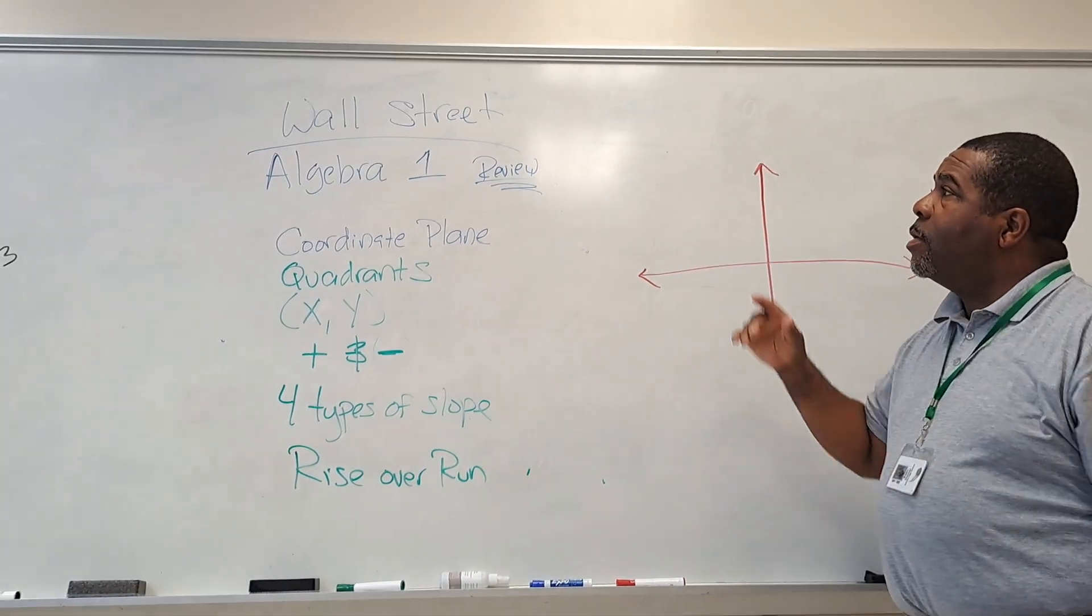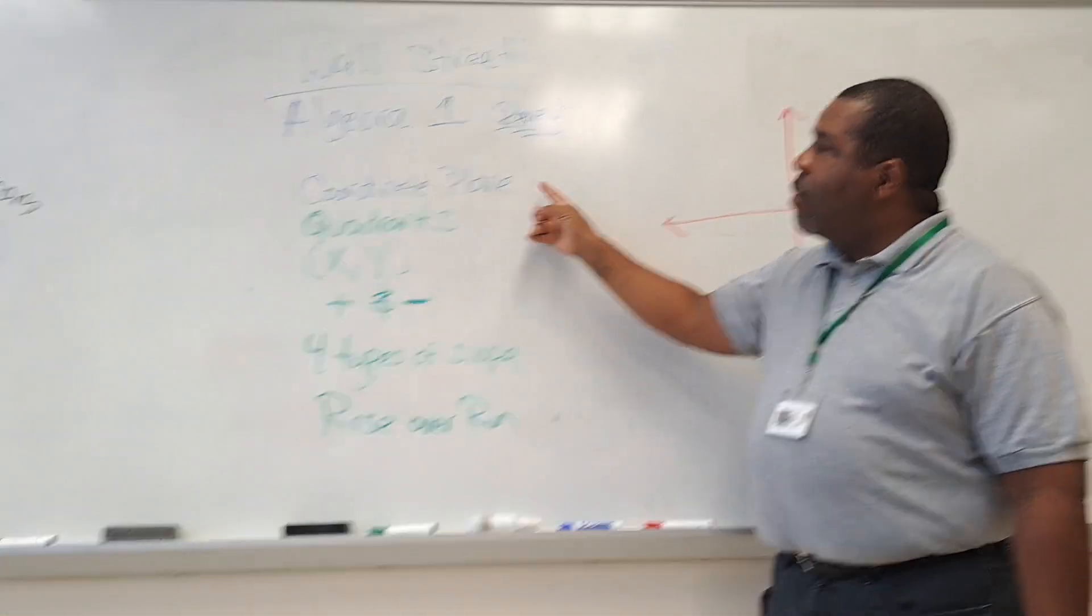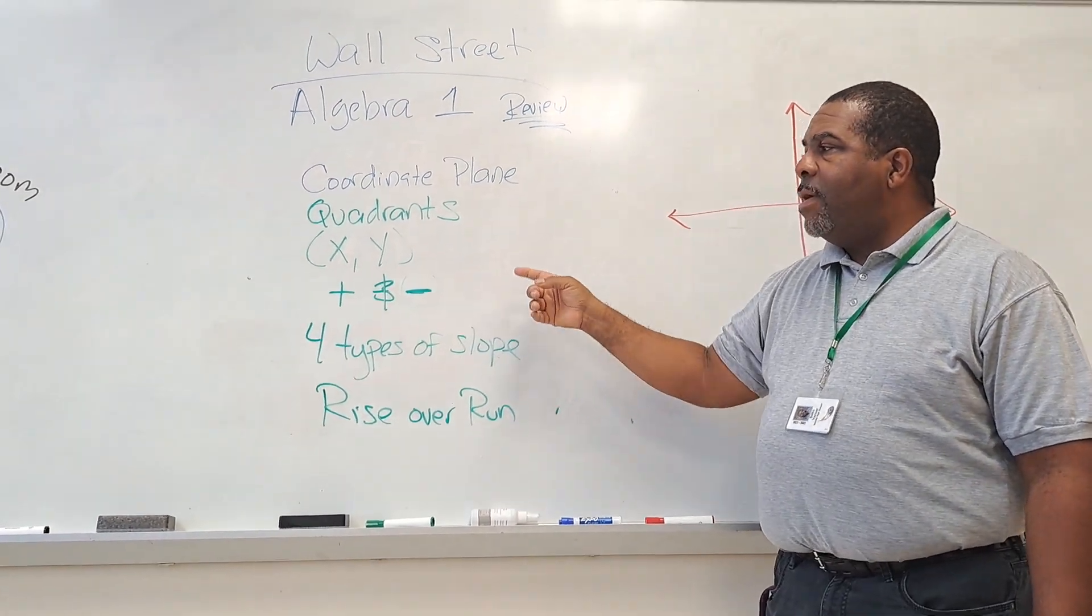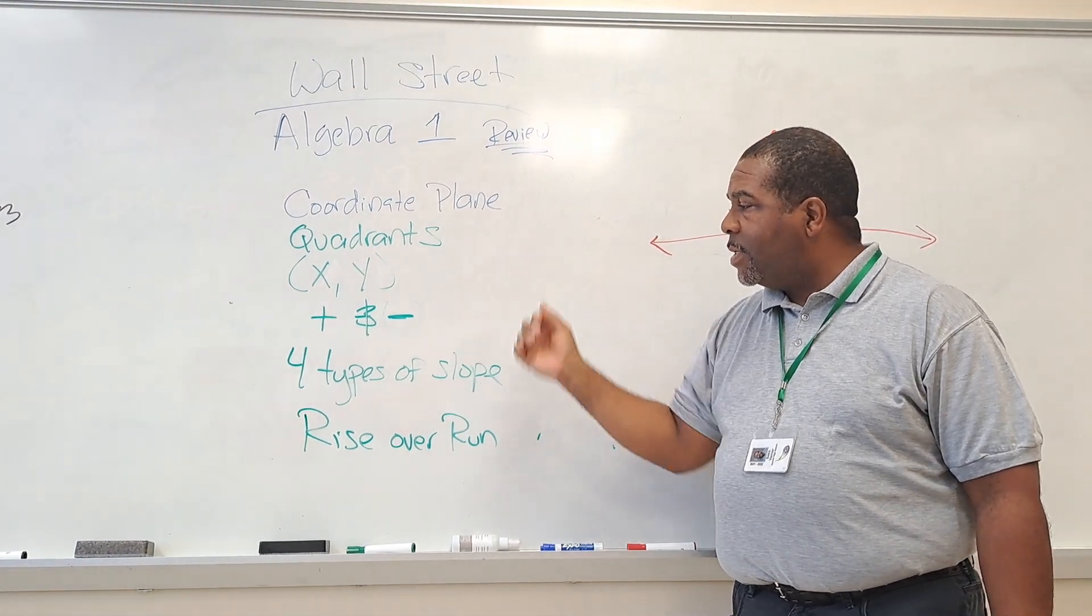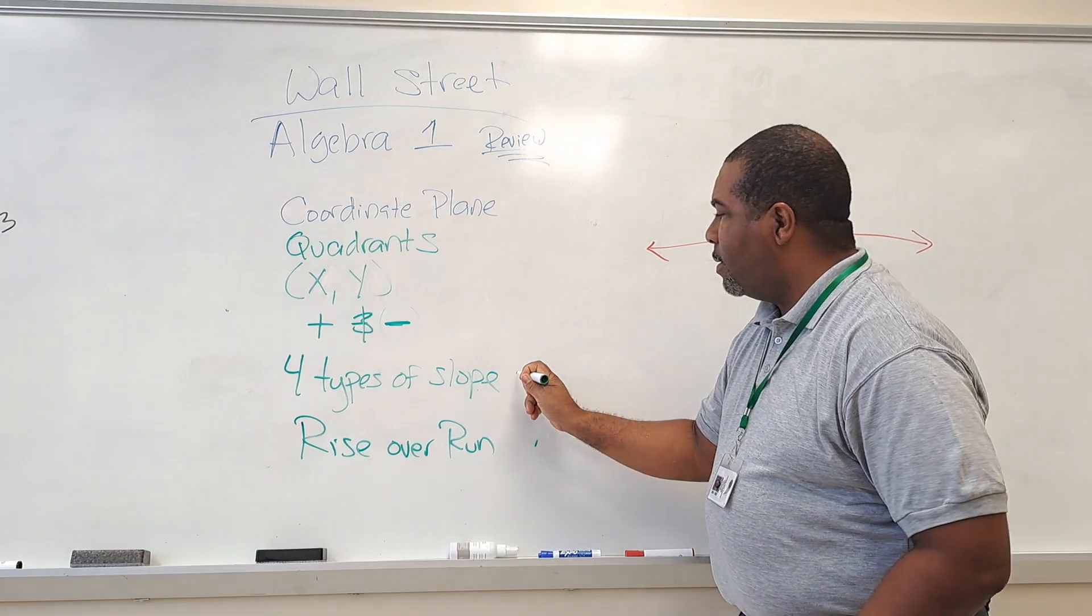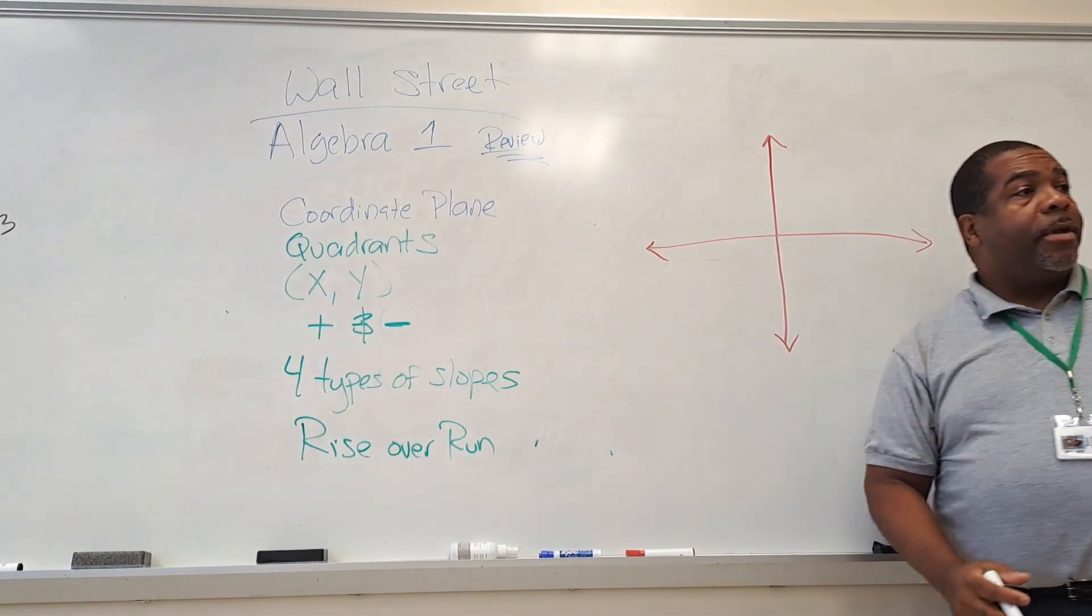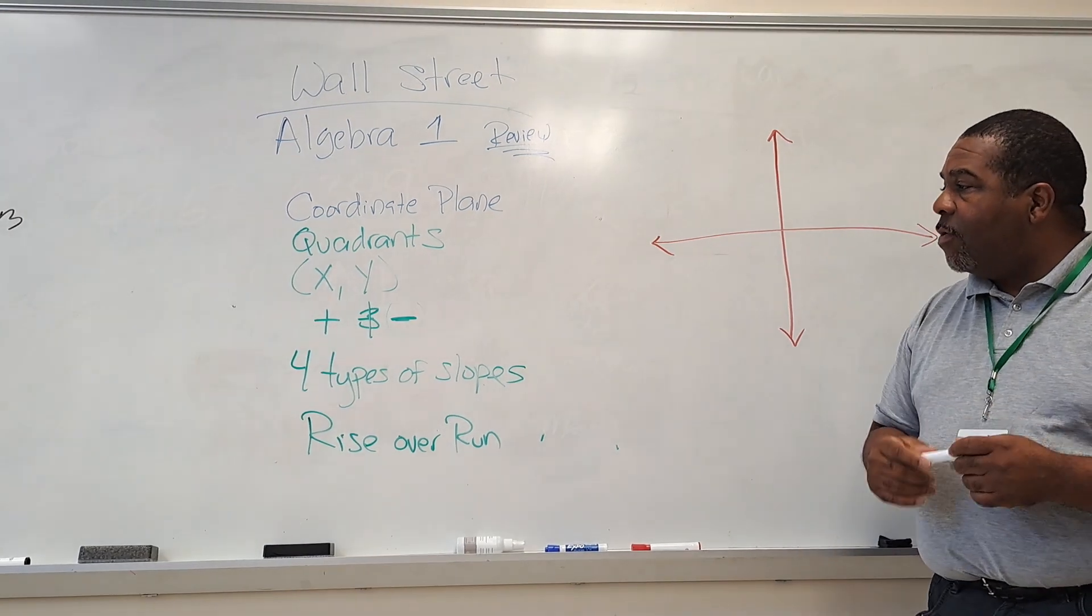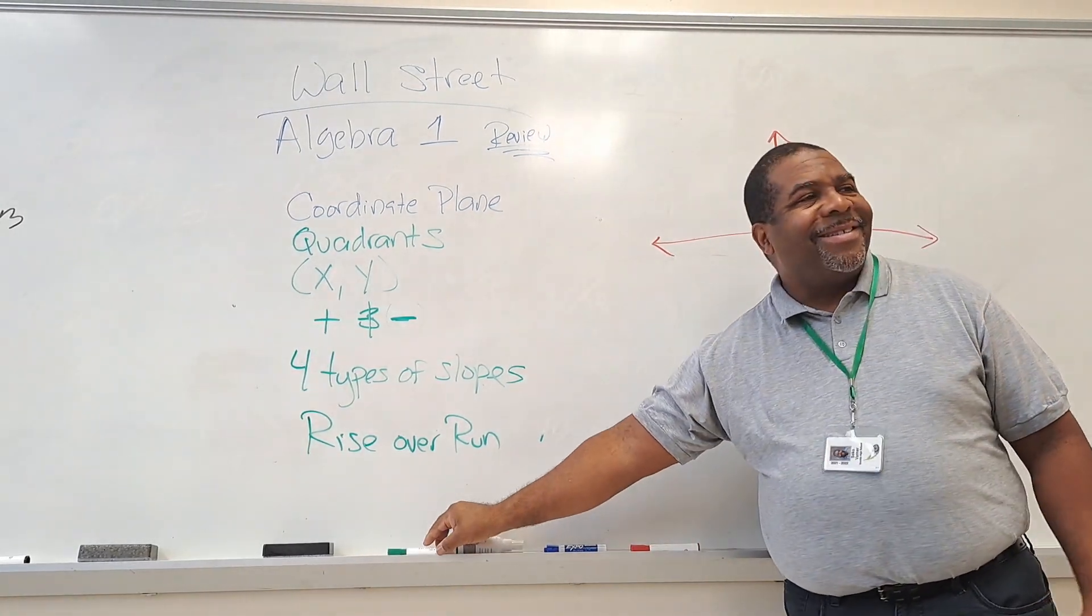So we're going to kind of do a quick review on coordinate plane, quadrants, X, Y, the positive and negative of the coordinate plane, the quadrants, the four types of slopes, and rise over run. So let's go.